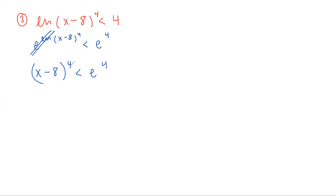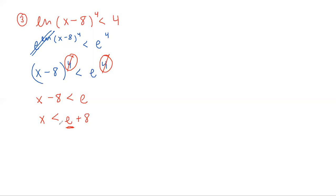Since we have a fourth power on the left and e to the fourth on the right, we can cancel those exponents, leaving x minus 8 is less than e. Adding 8 to both sides gives x is less than e plus 8. Don't leave your answer in that format — e is a constant, so type it in your calculator. Press 2nd divide to get e, then add 8, and you should get x is less than 10.7183.